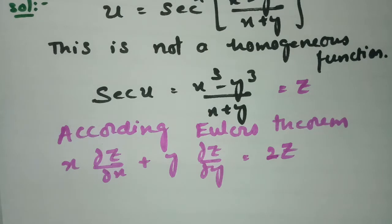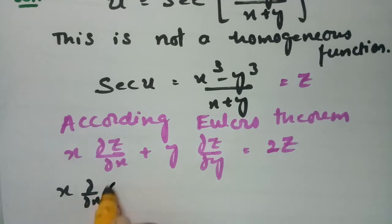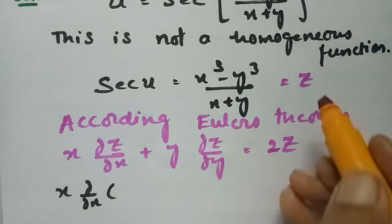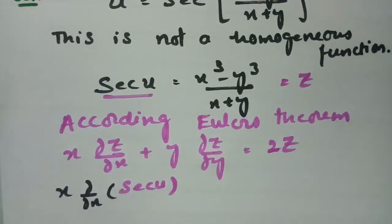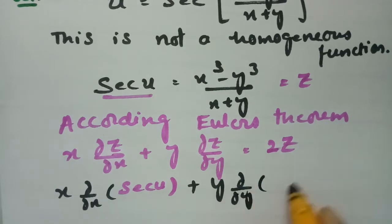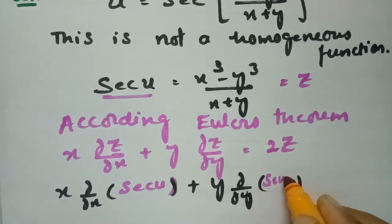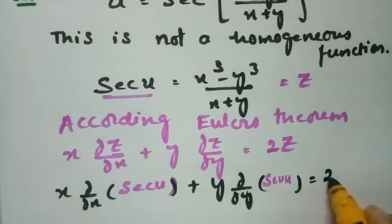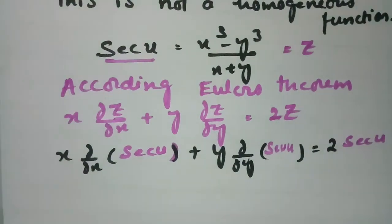Substituting z as secant u, this becomes x into ∂/∂x of secant u, plus y into ∂/∂y of secant u, is equal to 2 times secant u.